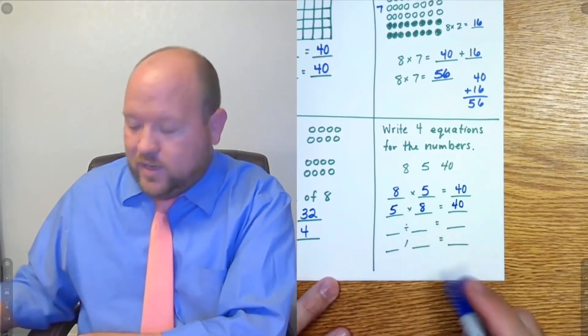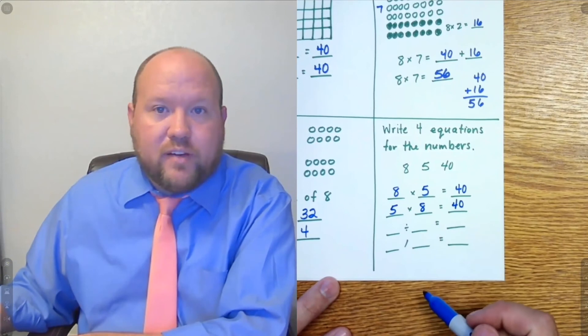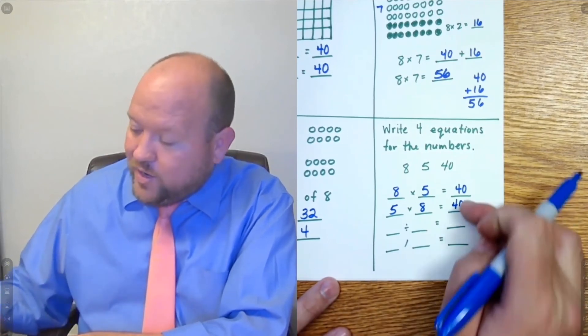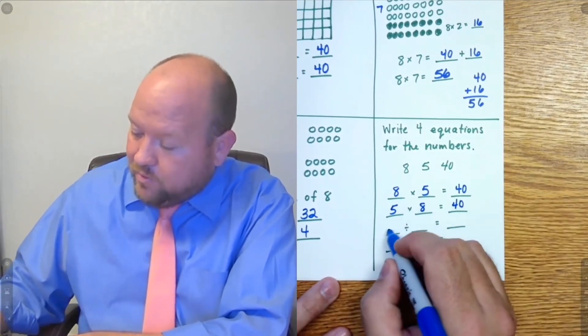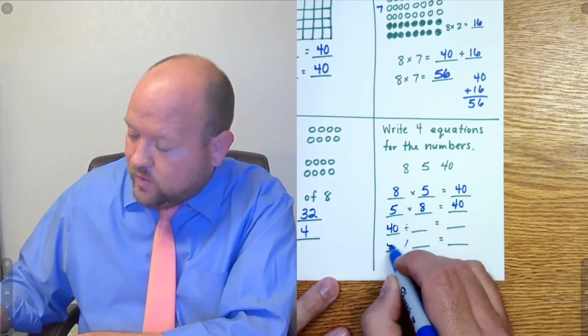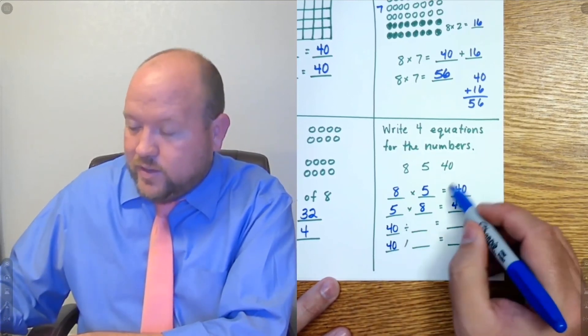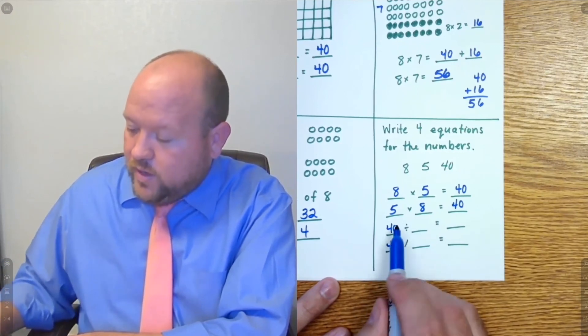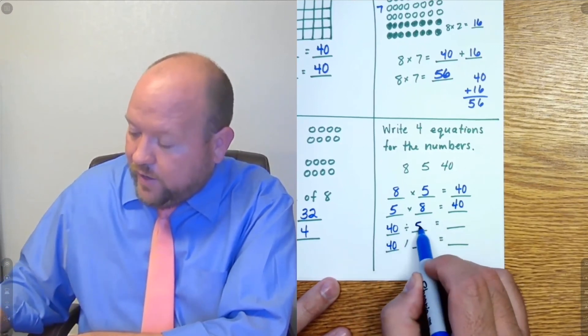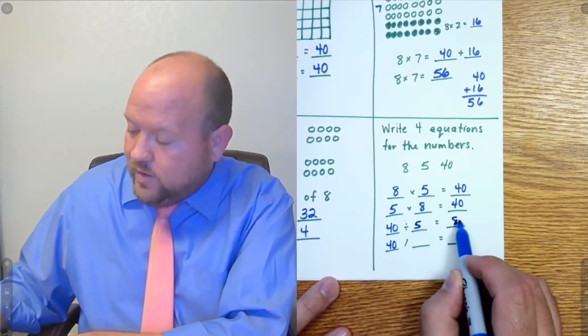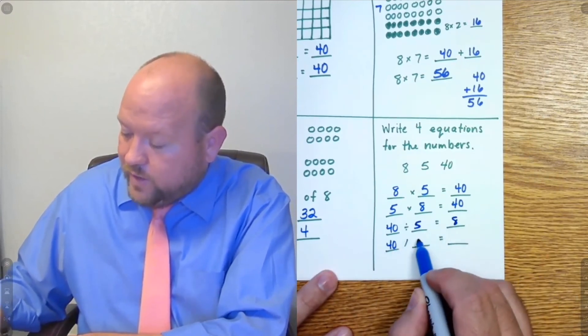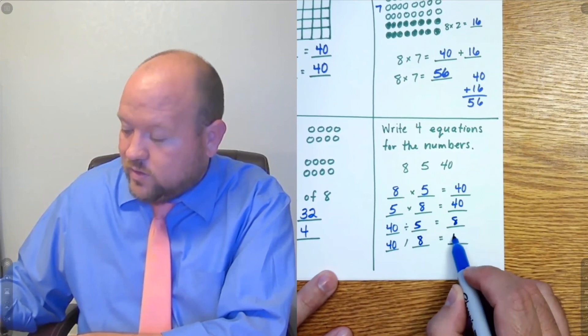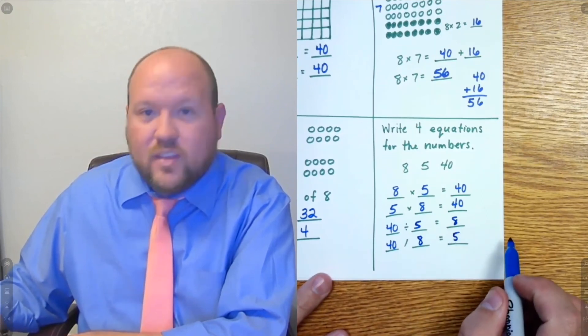So now I'm going to divide. I'm using two different symbols here, but they both mean divide. And so, therefore, I know that I'm going to put 40 in the front. I'm going to take that answer right there, and it's going to turn into the first part of my division. And I know that 40 divided by 5 equals 8. And therefore, 40 divided by 8 equals 5.